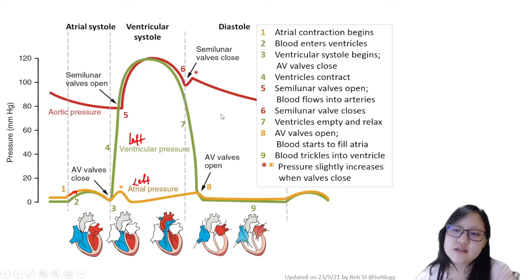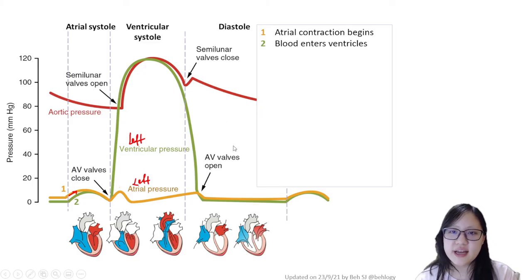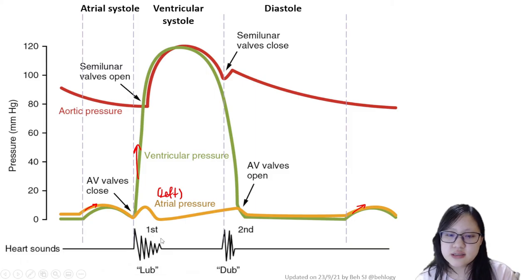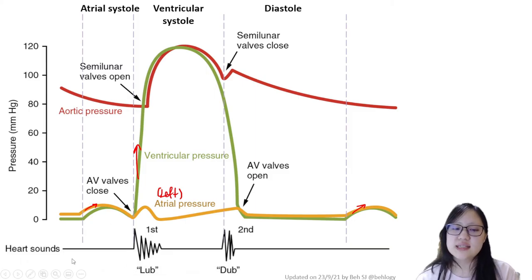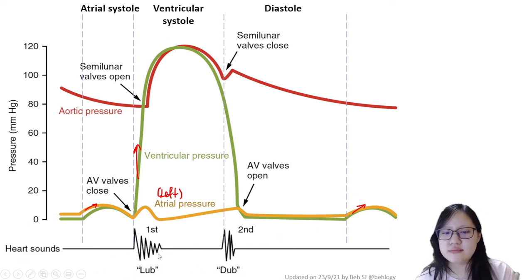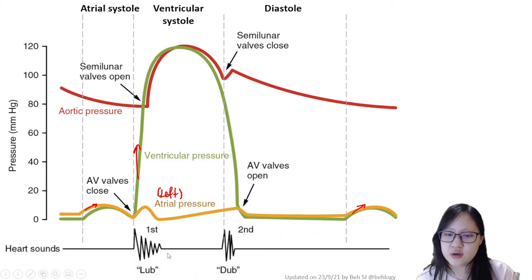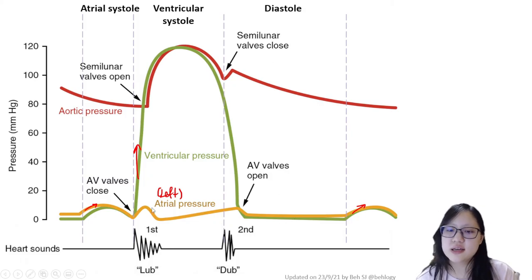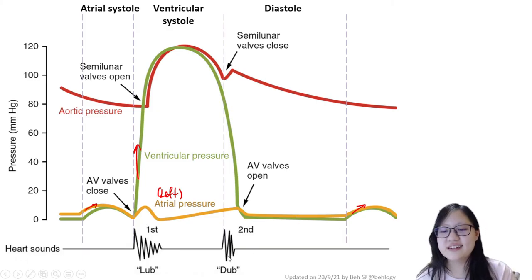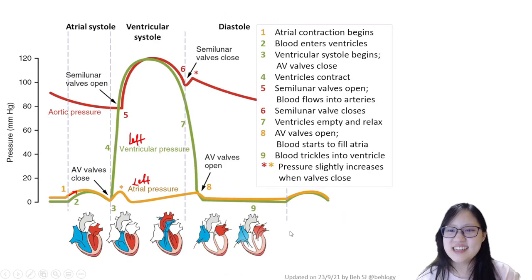Just a reminder: the 'lup' sound is the AV valve closing, and you can see heart sounds plotted on the same x-axis as the pressure graph. The AV valve closing produces the 'lup,' and the closing of the semilunar valves produces the 'dup.' The closing of valves not only causes a slight pressure increase but also produces sound — just like slamming a door.